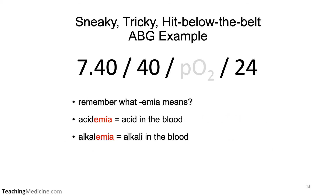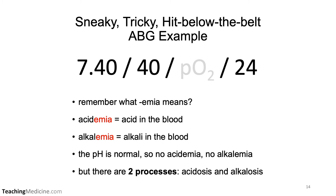In part one of our presentation series, we defined what 'emia' means: acidemia means acid in the blood, and alkalemia means alkali in the blood. In this case the pH is normal, so there is no acidemia and no alkalemia. But there are two processes going on — an acidosis process and an alkalosis process that balanced each other off. So we have alkalosis and acidosis without acidemia or alkalemia.